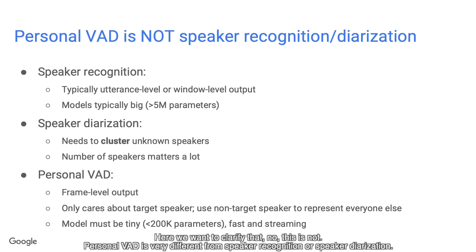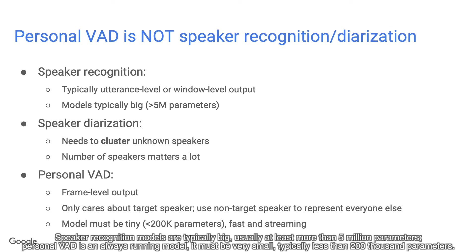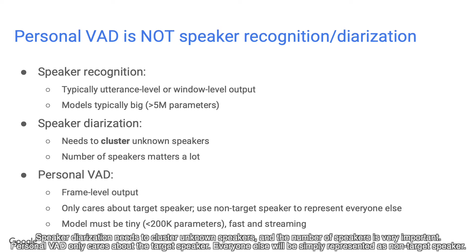Here we want to clarify that this is not the case. Personal VAD is very different from speaker recognition or speaker diarization. Speaker recognition models usually produce results at utterance level or window level, but Personal VAD produces output at frame level — it is a streaming model and very sensitive to latency. Speaker recognition models are typically big, usually more than 5 million parameters, while Personal VAD must be very small, typically less than 200,000 parameters. Speaker diarization needs to cluster unknown speakers, whereas Personal VAD only cares about the target speaker — everyone else is simply non-target speaker.